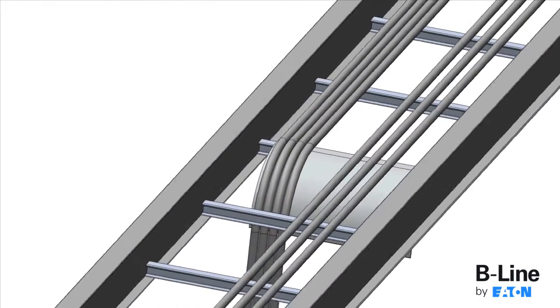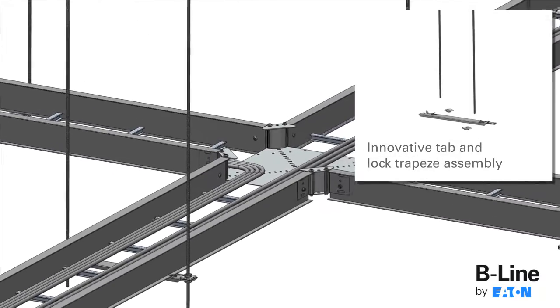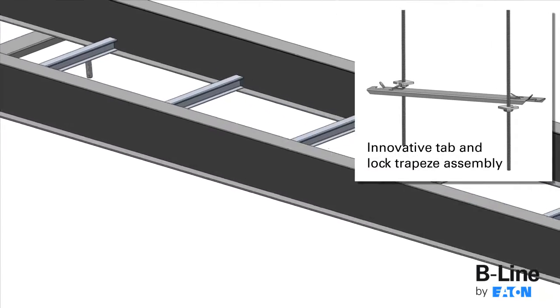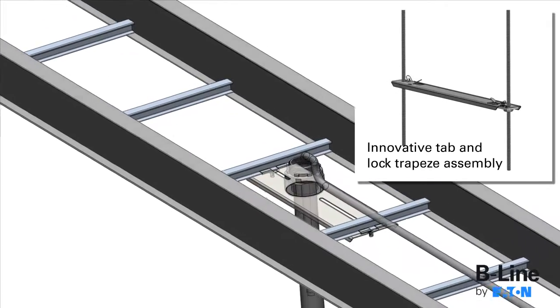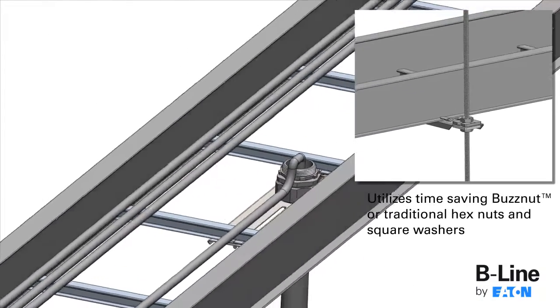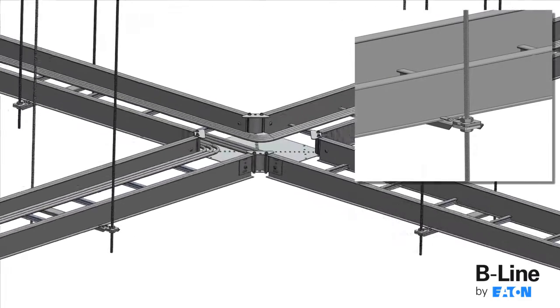The QuickSplice System also includes a full line of labor-saving accessories, including the innovative tab-and-lock trapeze assembly, which eliminates the need for hold-down clamps on the cable tray system. By simply using a flat-head screwdriver, the installer can position and lock the trapeze onto the threaded rod and clamp the cable tray to the support assembly.